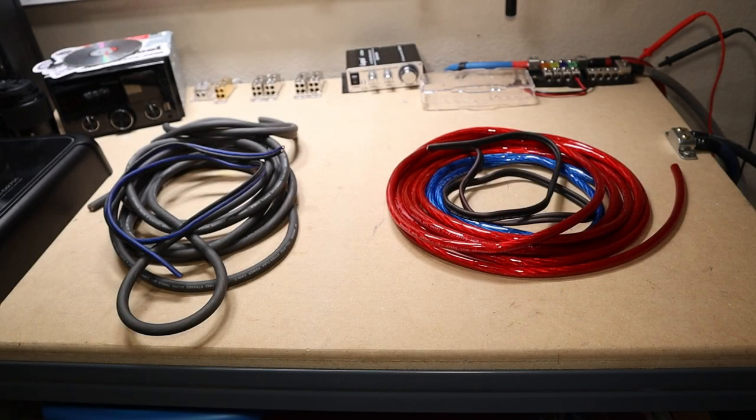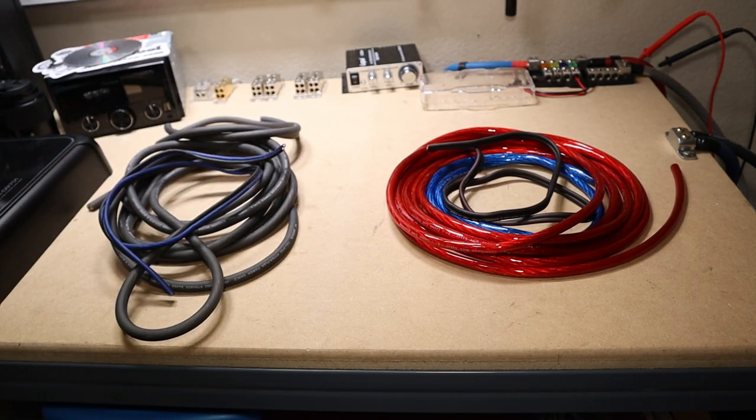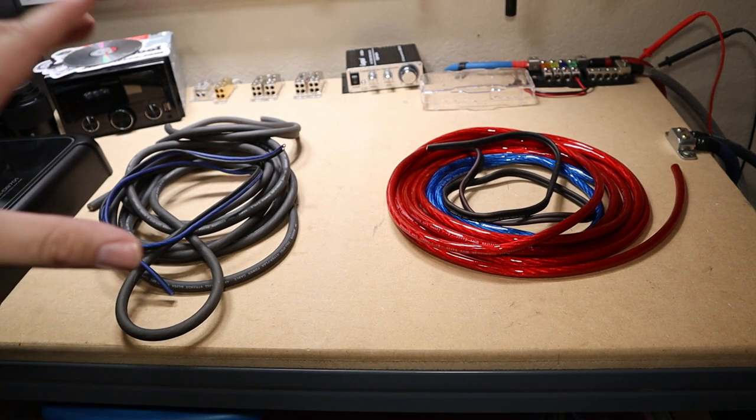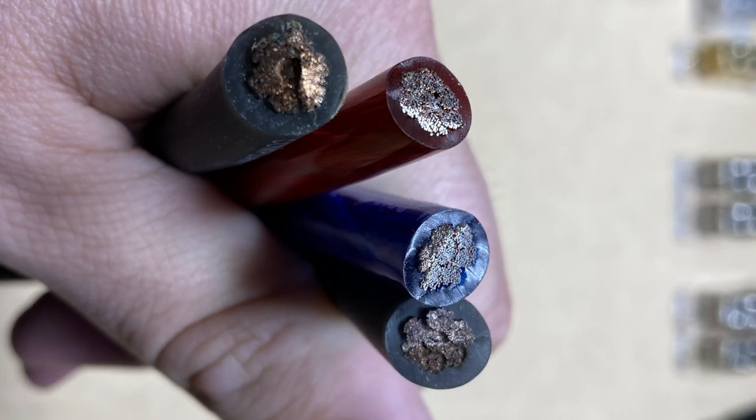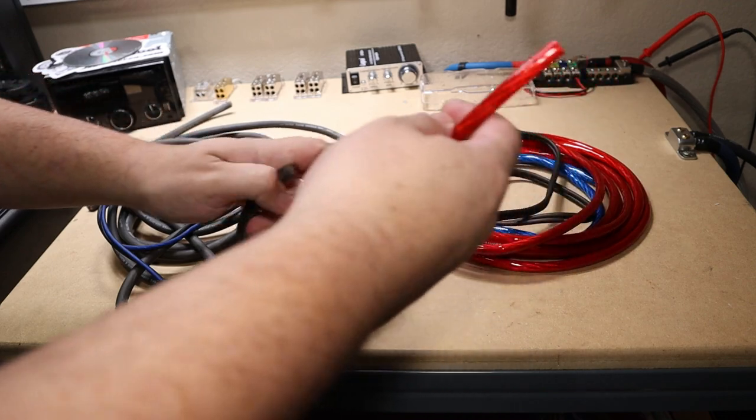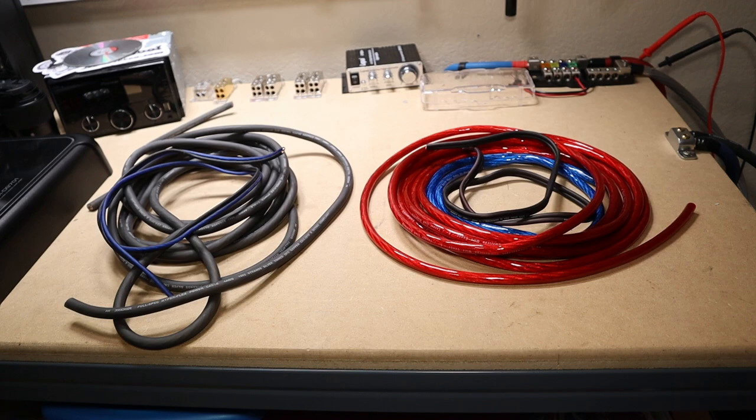Here are the two contenders. We have OFC in the left corner, we have CCA in the right corner. These happen to be two different brands, but that doesn't matter. I picked them because they have the same size. They're standard American wire gauge, four gauge, right here.